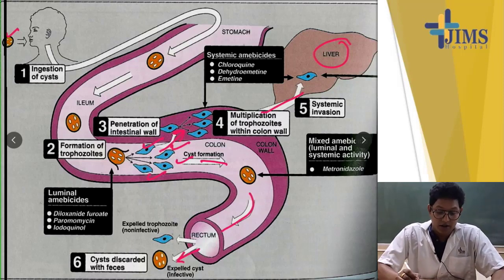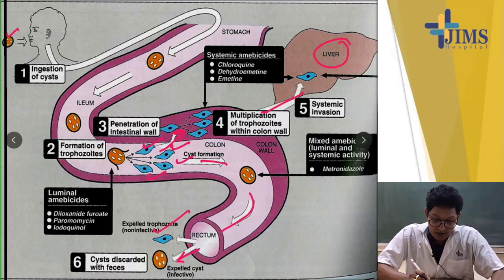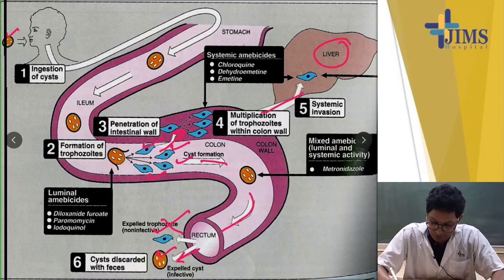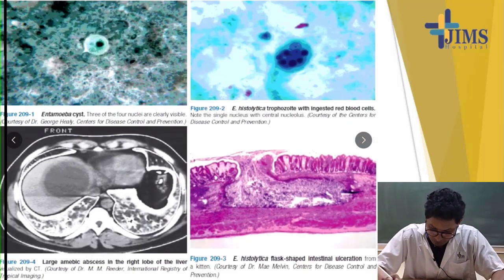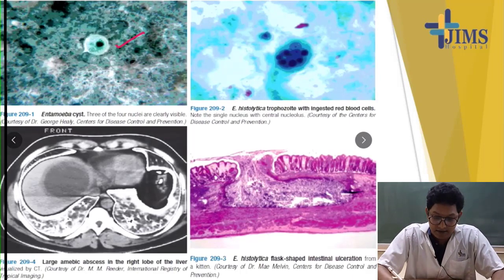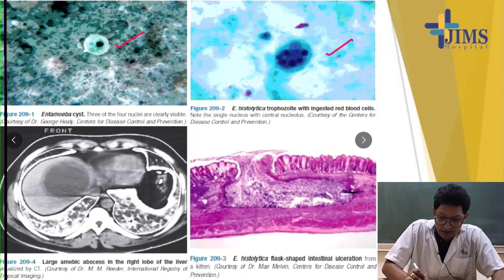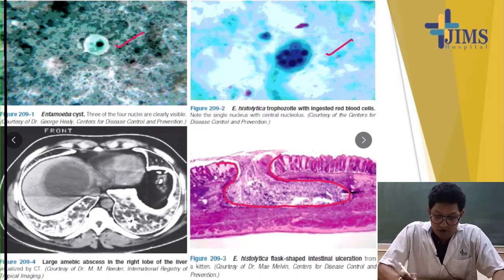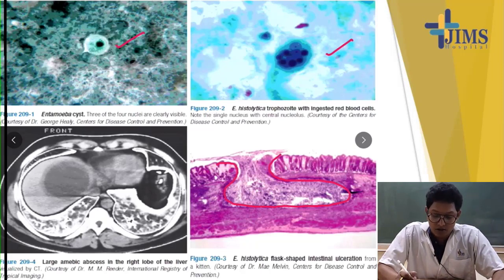During acute amoebic dysentery, a patient may pass both trophozoites as well as cysts, but the cyst is the infective form, not the trophozoite. Here you can see an Entamoeba histolytica cyst and a trophozoite. Note the flask-shaped ulcer and its margins — this flask shape is the reason the patient presents with blood and mucus mixed with stool.